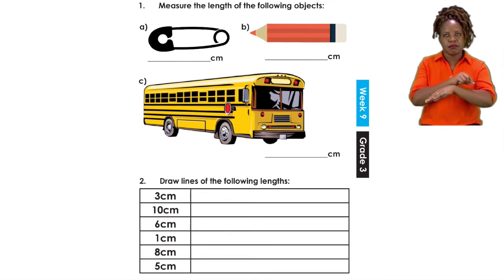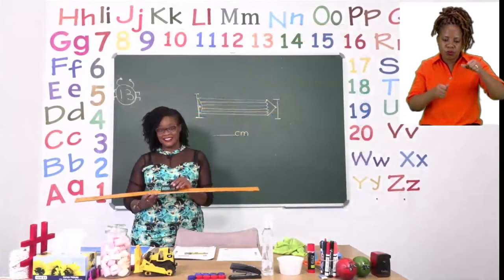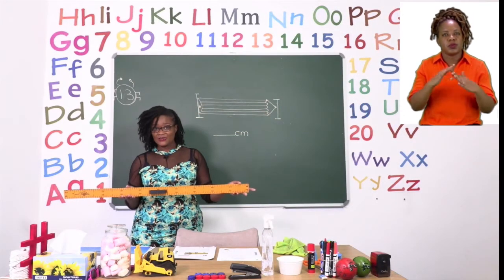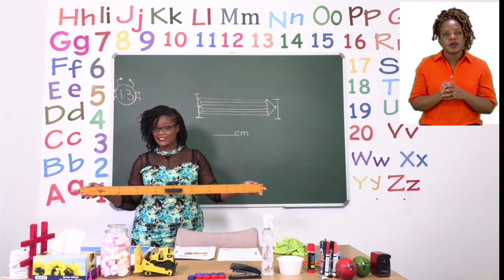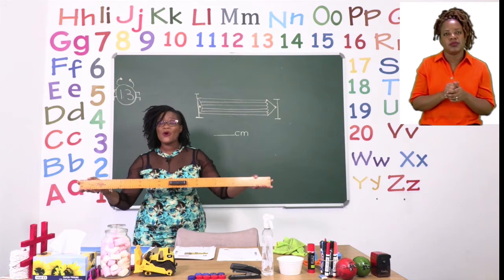Now we are going to be using the side that is written CM for centimetre. If you can see, you have for the first question three items that need to be measured. Now I'm going to teach you how to measure using your ruler. This is my ruler in the classroom. Now, as you can see, it's quite long. So this is actually a metre ruler, but it has the same measurements as your ruler.